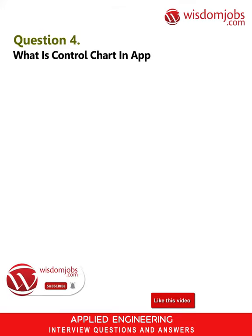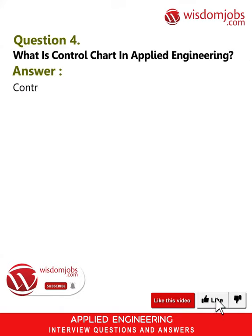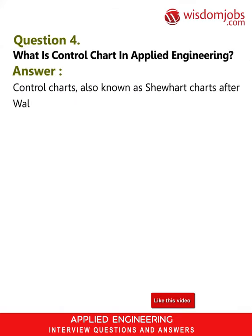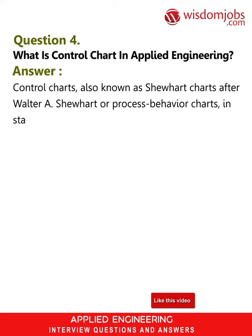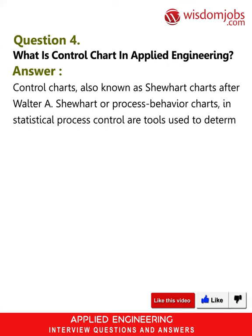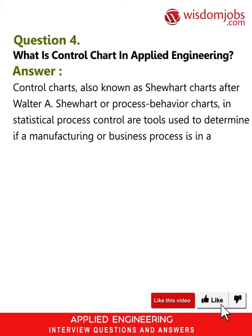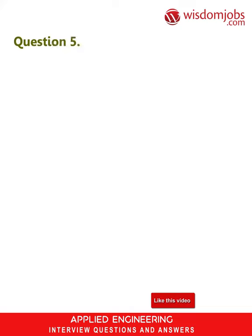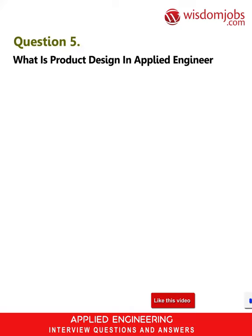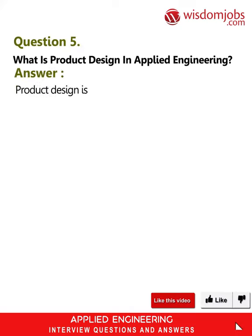Question 4: What is a control chart in applied engineering? Answer: Control charts, also known as Shewhart charts after Walter A. Shewhart, or process behavior charts, are tools used in statistical process control to determine if a manufacturing or business process is in a state of statistical control.